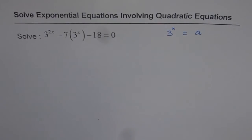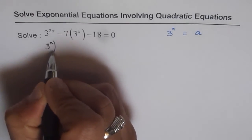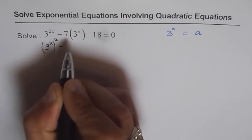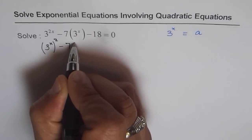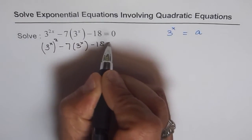See how. Now, 3 to the power of 2x basically is 3 to the power of x whole square, right? And then we have 7 times 3 to the power of x minus 18 equals 0.